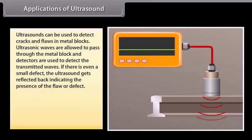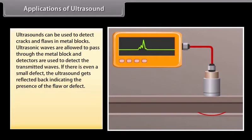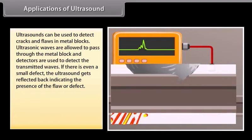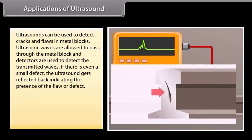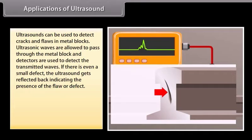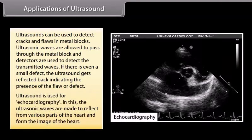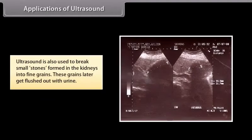Ultrasounds can be used to detect cracks and flaws in metal blocks. Ultrasonic waves are allowed to pass through the metal block and detectors are used to detect the transmitted waves. If there is even a small defect, the ultrasound gets reflected back indicating the presence of the flaw or defect. Ultrasound is used for echocardiography. In this, the ultrasonic waves are made to reflect from various parts of the heart and form the image of the heart. Ultrasound is also used to break small stones formed in the kidneys into fine grains. These grains later get flushed out with urine.